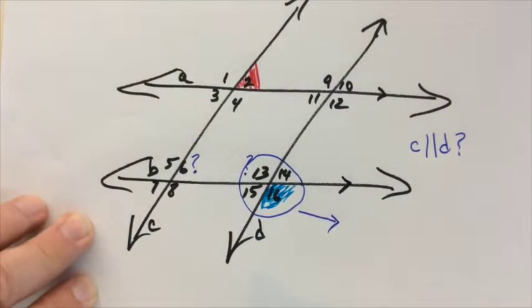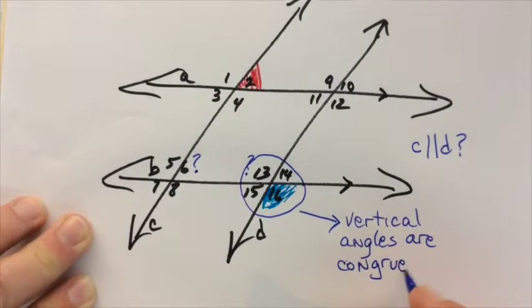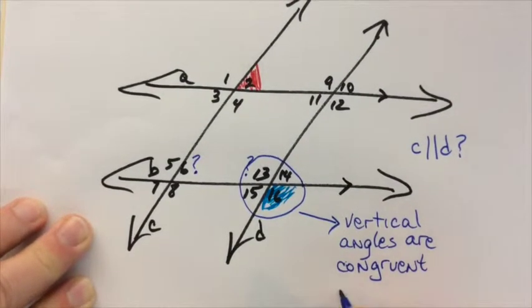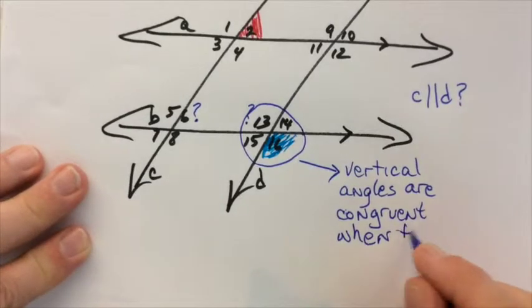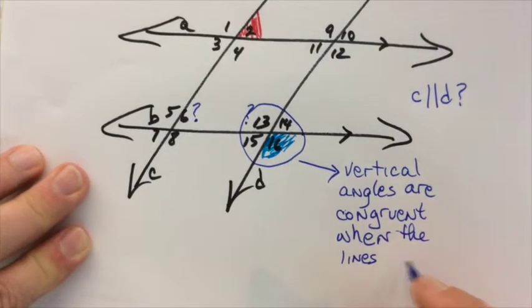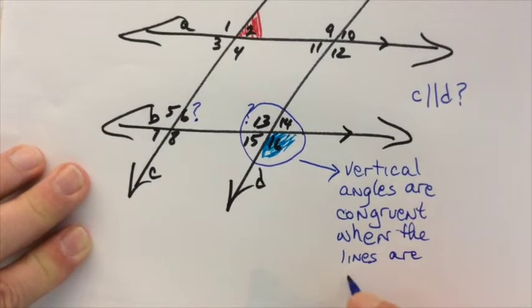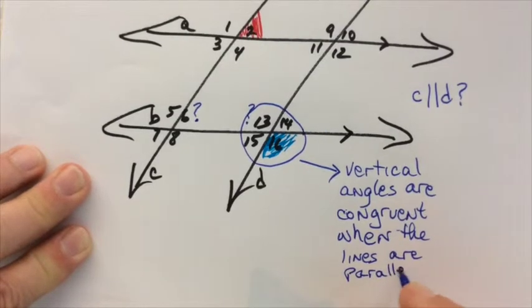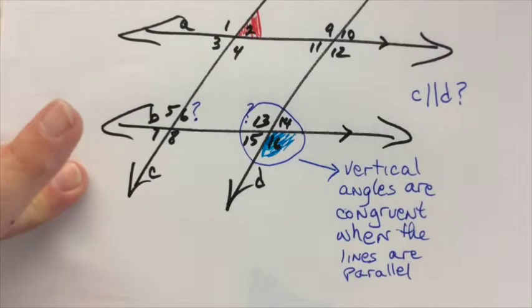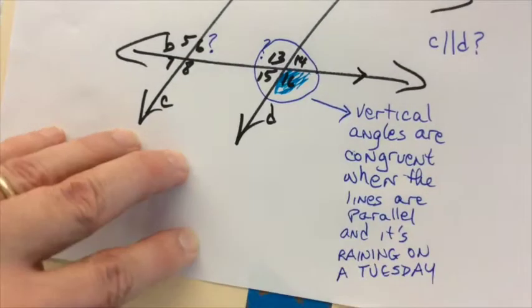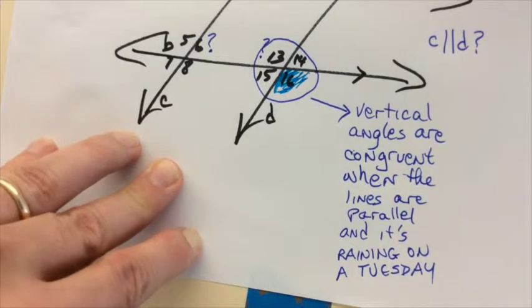What do I know? What's that? 13 is congruent with 6. Why? Because they're vertical. If you say vertical angles are congruent when the lines are parallel, is that a good answer? No.